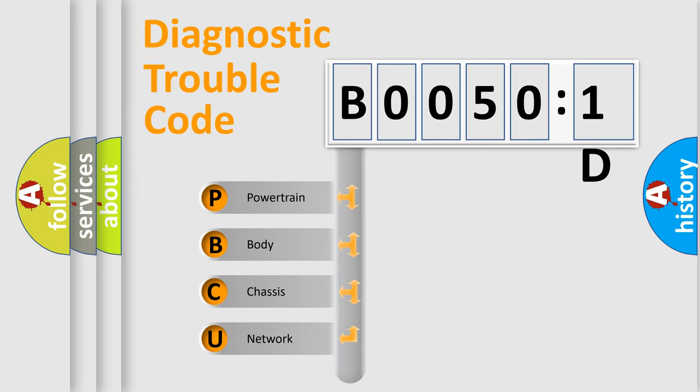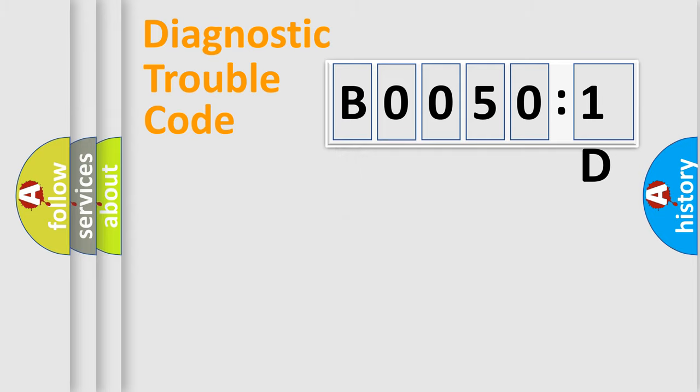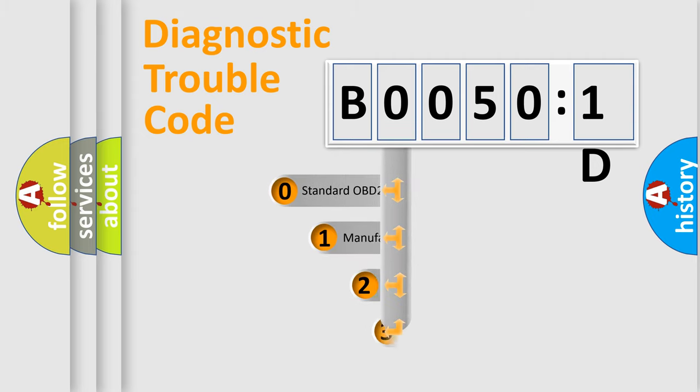We divide the electric system of automobile into four basic units: Powertrain, body, chassis, and network. This distribution is defined in the first character code.